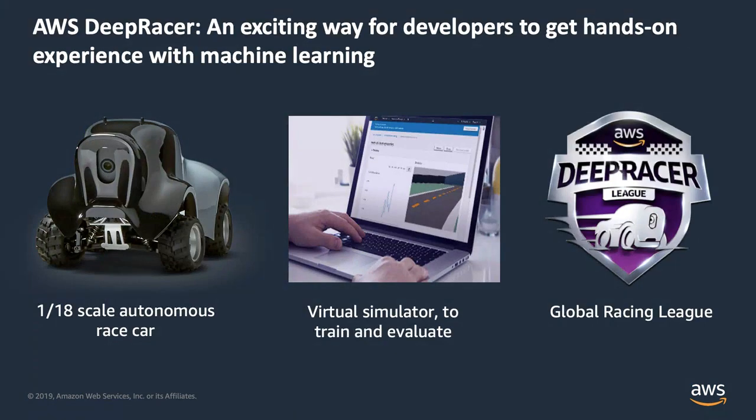DeepRacer has three main components. The car, which is a 1/15th scale fully autonomous vehicle complete with a monster truck chassis. A virtual simulator that allows your machine learning program to train itself on. And a league where people can post their best times, discuss new ways to teach their vehicles, and compete.